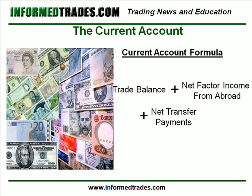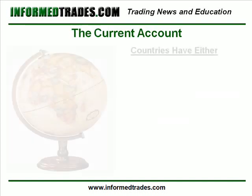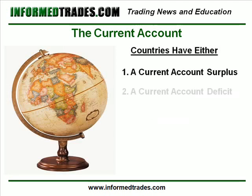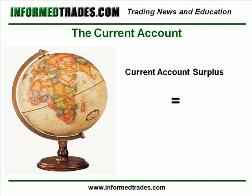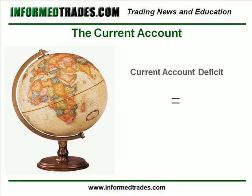When thinking about a country's imports and exports — the balance of trade portion — you will also hear a country described as having either a current account surplus or a current account deficit. A current account surplus basically means that a country is exporting more than they are importing, which, as we learned in our lesson on trade flows, should strengthen the value of a currency, all else being equal. A current account deficit basically means that a country is importing more than it is exporting, which should weaken the value of its currency, all else being equal.